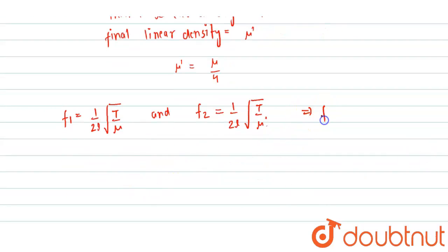Okay, so now when we replace the value of mu dash from here, we get that f2 will be equal to one upon two l, square root of t upon mu upon four. Okay, so let it be equation one and equation two.